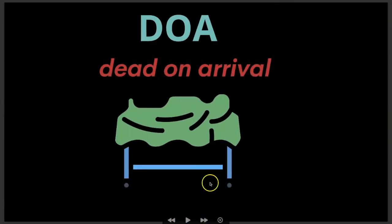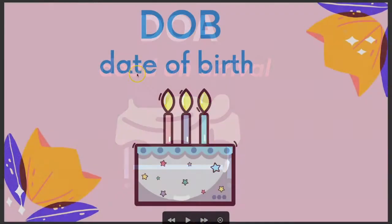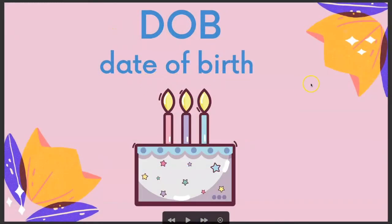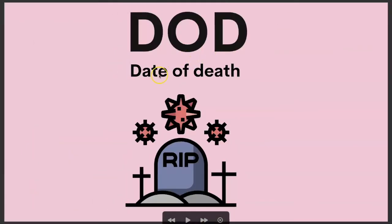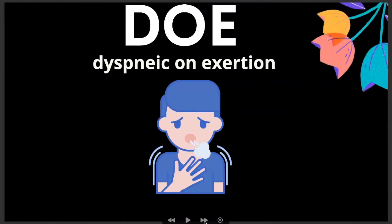DOA is dead on arrival. DOB is date of birth. DOD is date of death. DOE is dyspneic on exertion — so having trouble catching your breath when exercising.